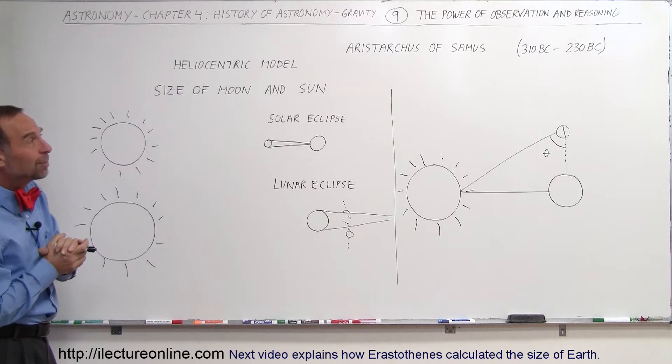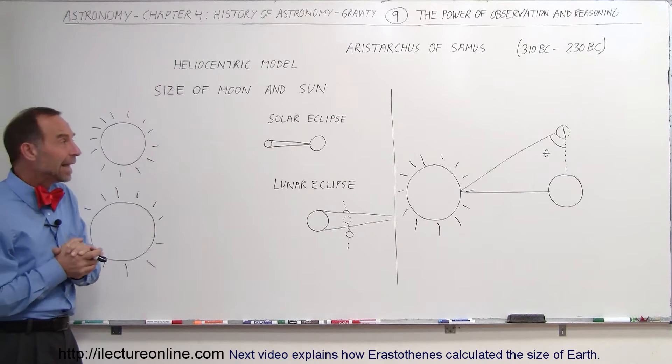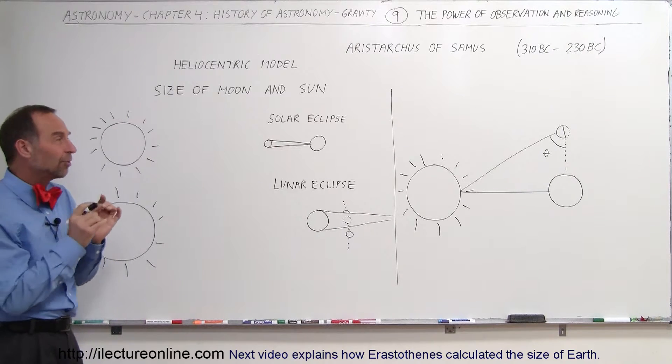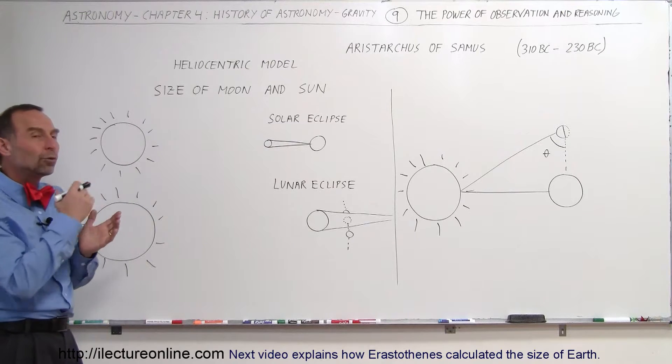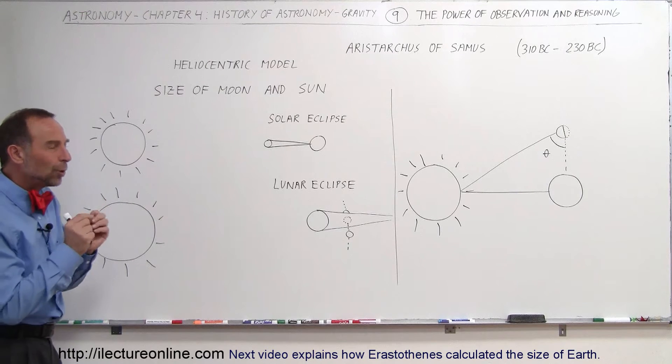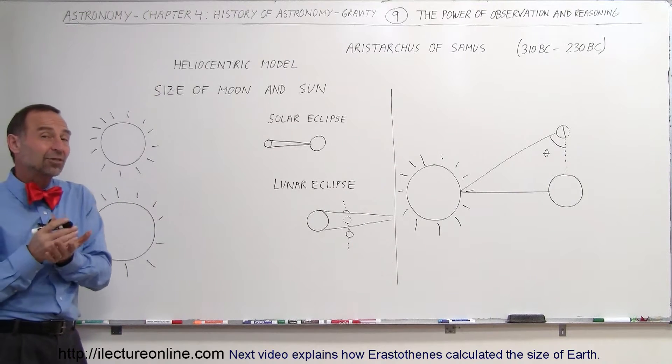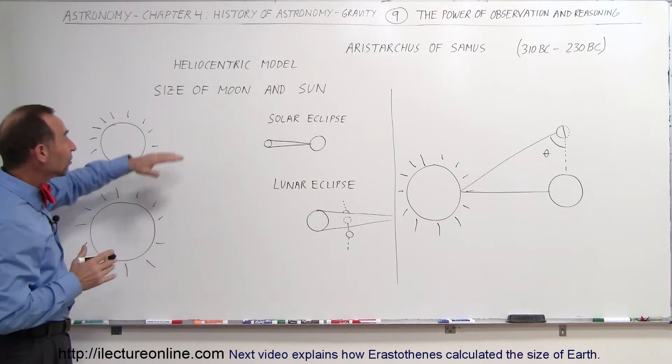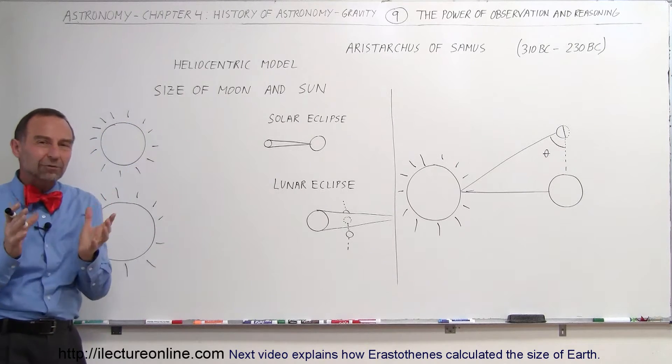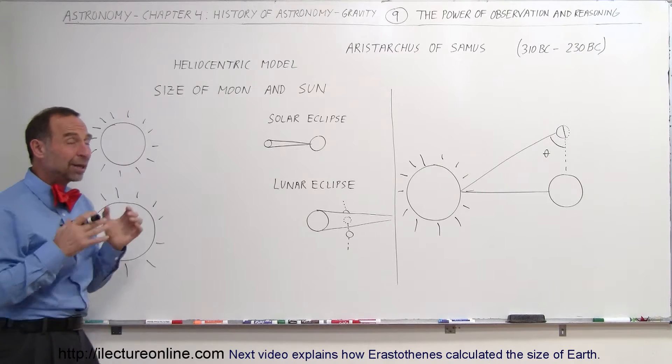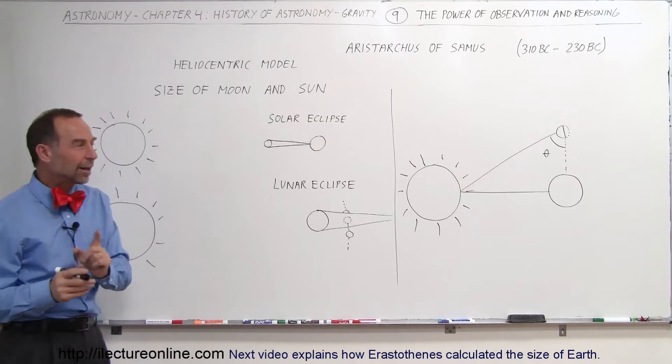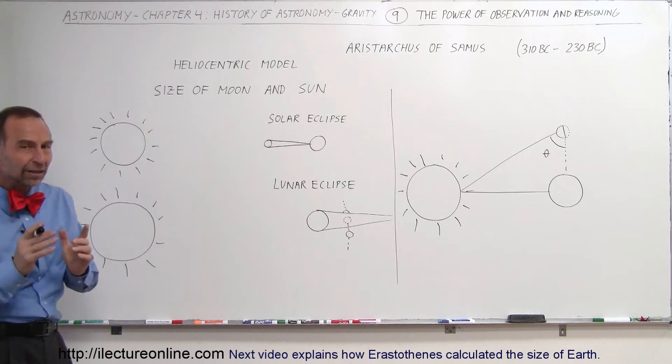He was another Greek. He lived in the period 310 BC to 230 BC. And what he did was he started observing the solar and lunar eclipse. And from doing that, he began to realize that he was actually able to figure out the size of the Moon and the Sun relative to the size of the Earth.